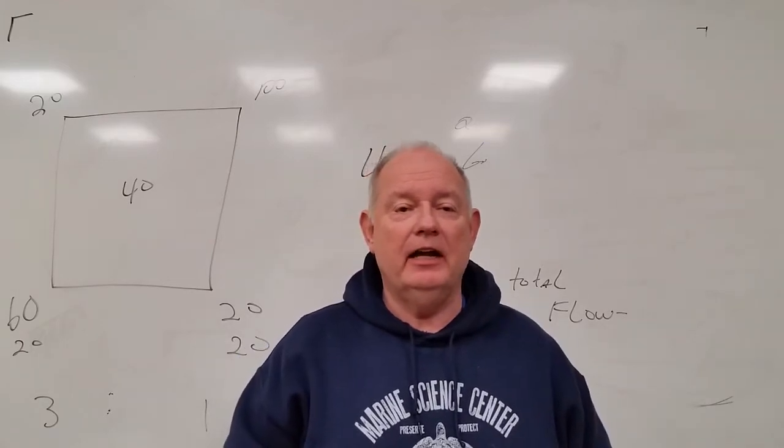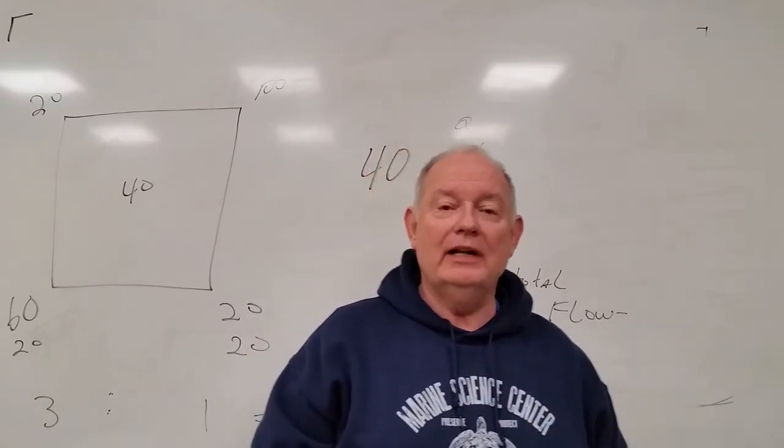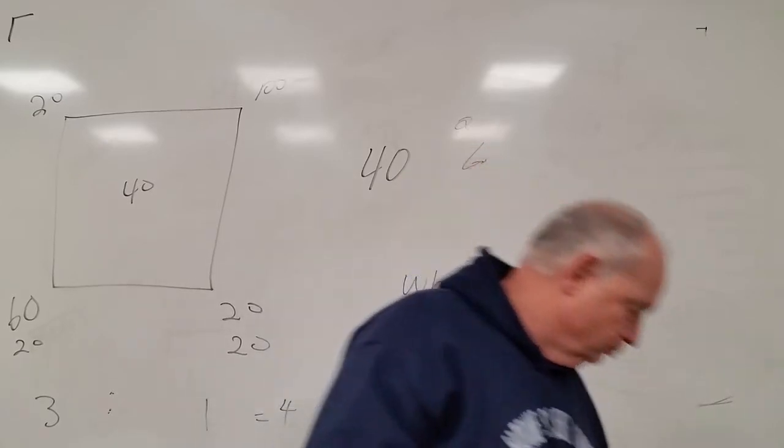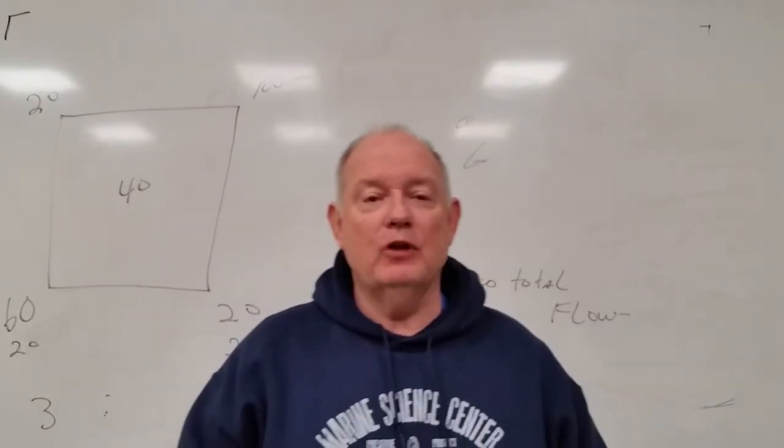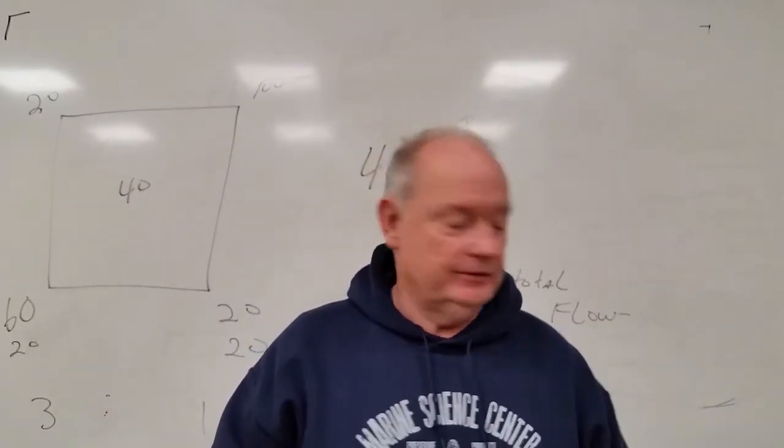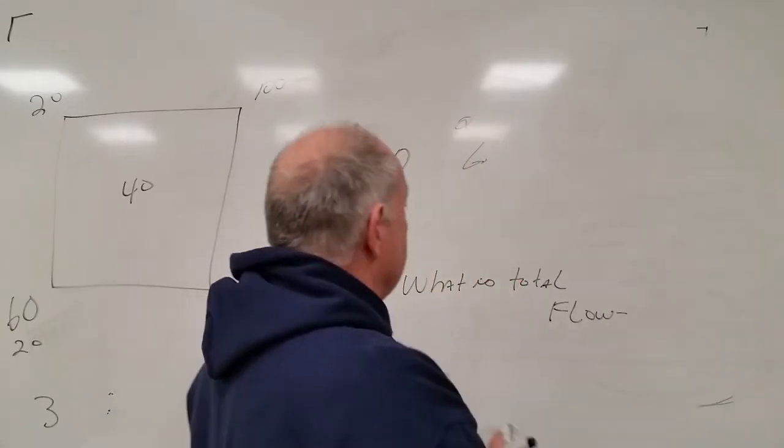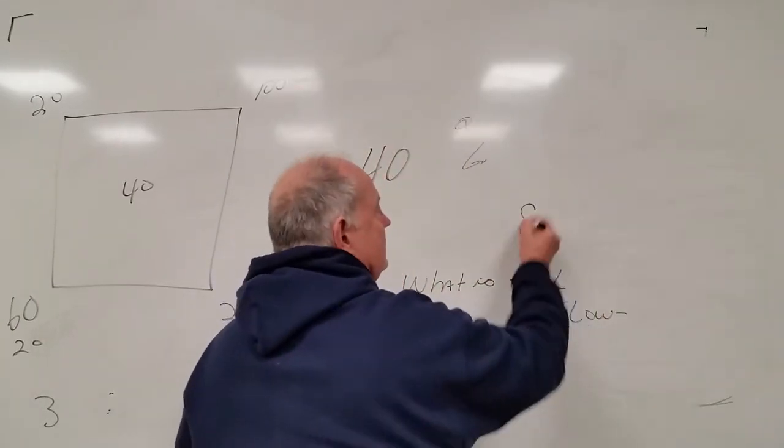Patient is receiving 40% via air entrainment mask. What is the total flow if your flow meter is set at 8 liters? We should write down 8 liters.